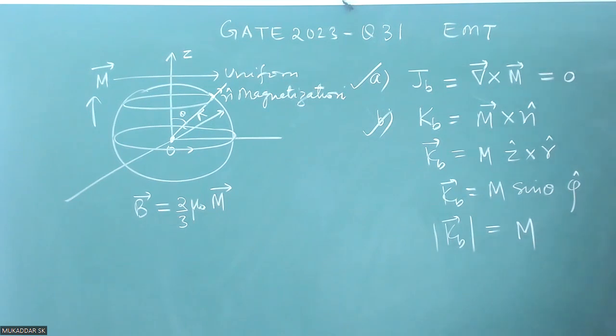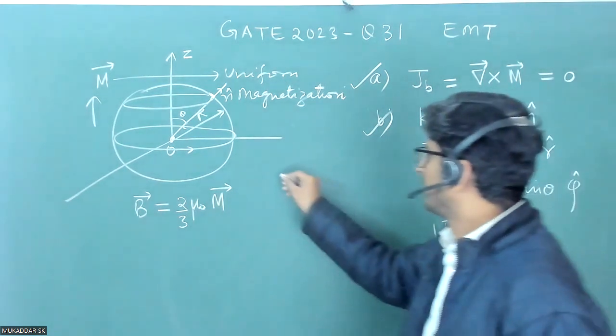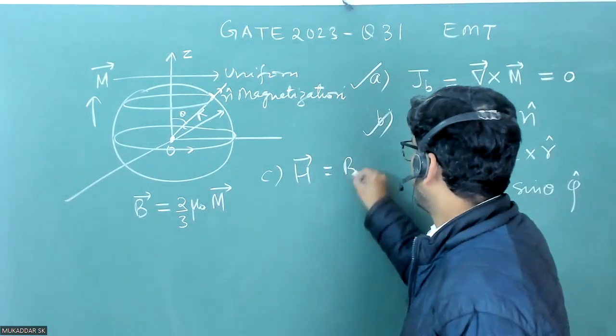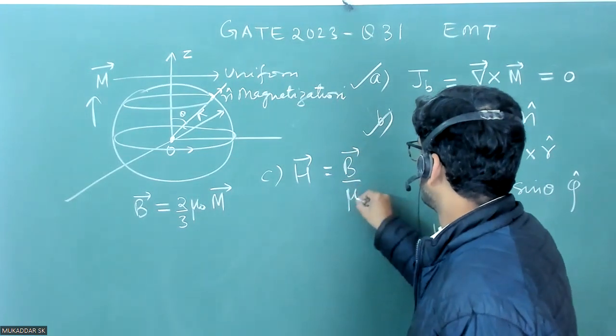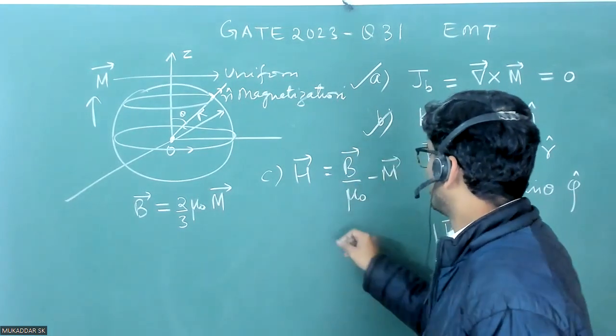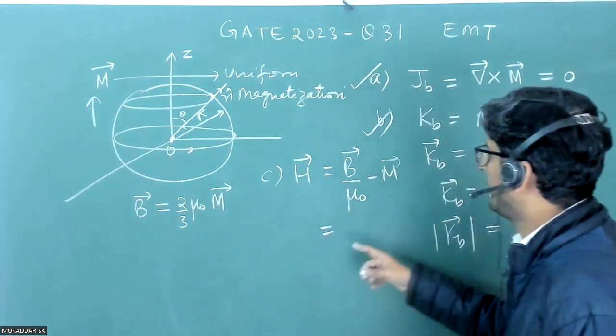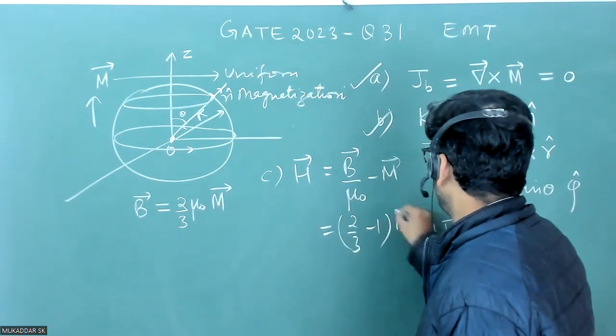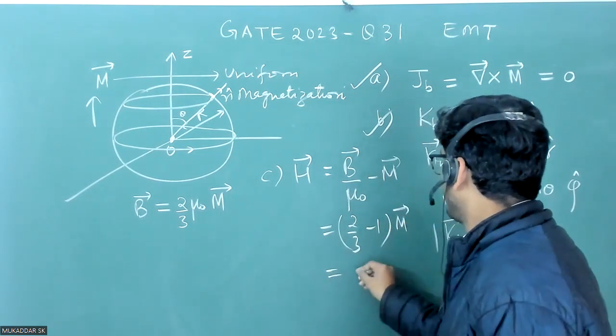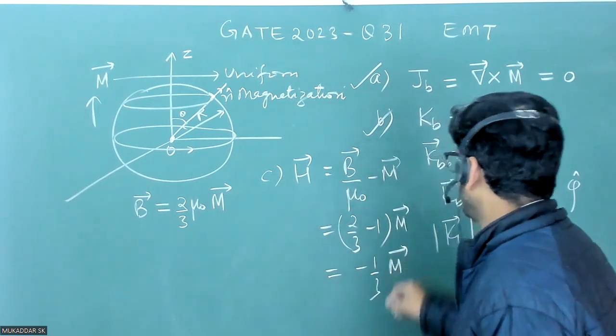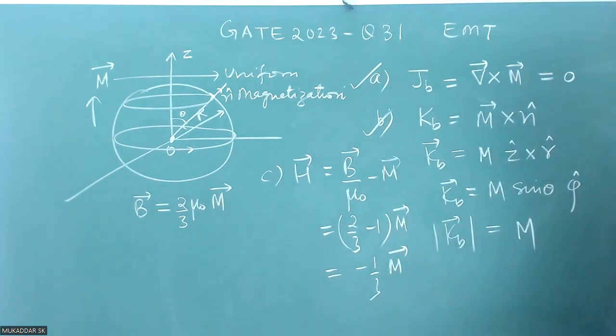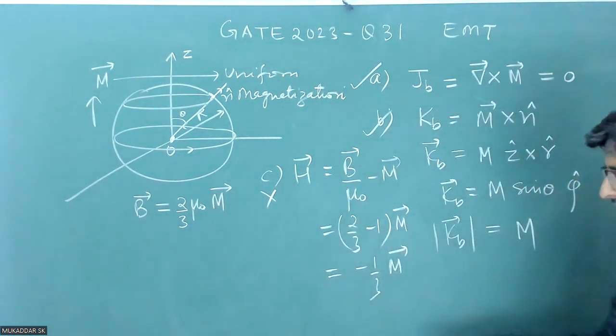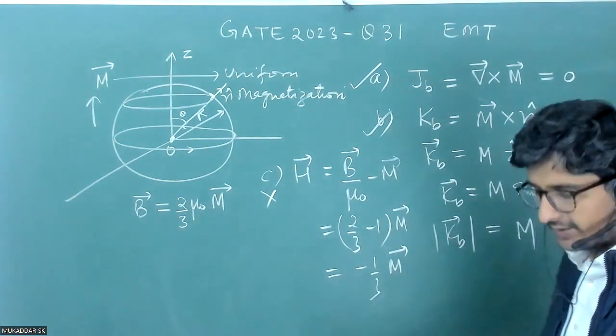In third option, they have asked about H. H we know is equal to B by mu naught minus M. This will be equal to magnetic field is already given 2 by 3. So 2 by 3 minus 1 M. That is equal to minus 1 by 3 M. But they have said that it is minus 2 by 3. So that's why C option will be incorrect.